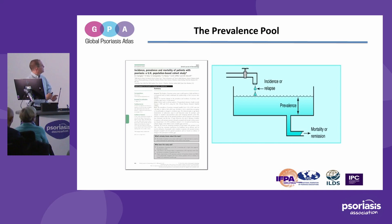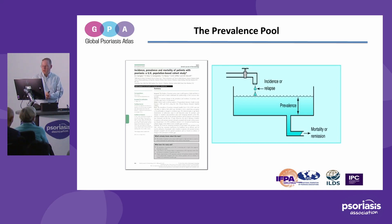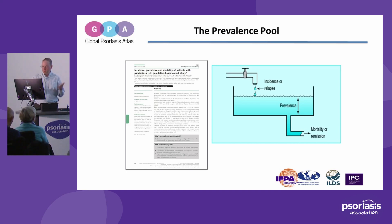We conducted this work and looked at a 15-year period of how common psoriasis was in the UK. Over that 15-year period we found that the prevalence was steadily increasing — in the early part it was about two percent, and at the end of the 15 years it was closer to three percent. So the prevalence had actually increased, and our question then was: what's driving this — is it the incidence, or is it the mortality?